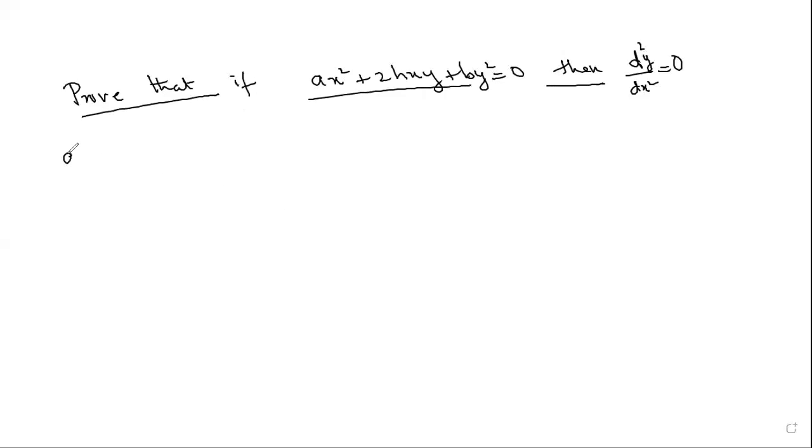Okay, start with first one: ax² + 2hxy + by² = 0. One question to you - have you seen every term has got same degree? What is the degree of this function?